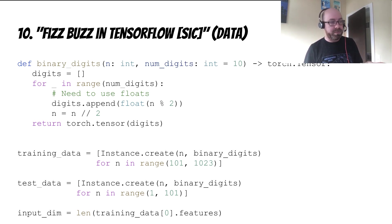We use binary digits as the feature vector. It turns out that there's some pretty interesting reasons why using binary digits as a vector of features, which allows you to represent all numbers up to 1,023, works reasonably well.